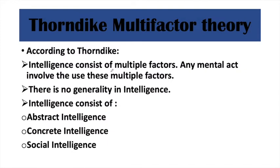First of all, Thorndike's multi-factor theory of intelligence. According to Thorndike, intelligence consists of multiple factors, and any mental activity we perform involves multiple factors of intelligence. He mentioned three types of intelligence: number one is abstract, number two is concrete, and number three is social.